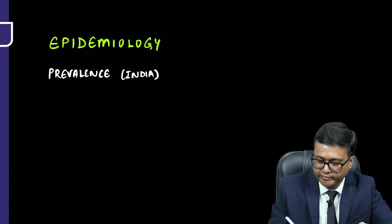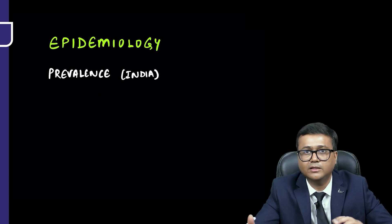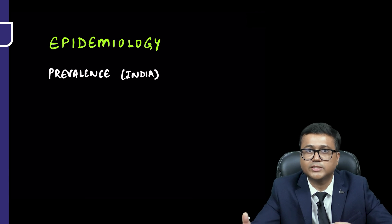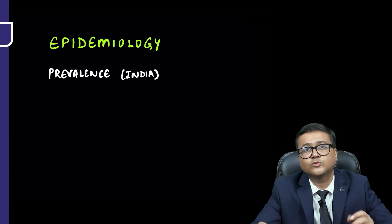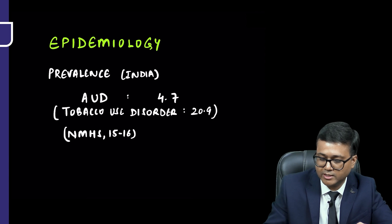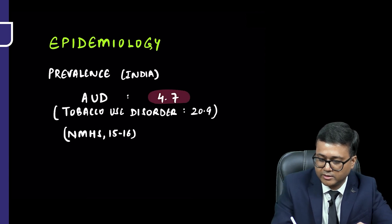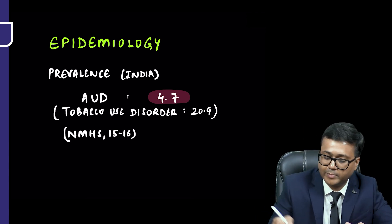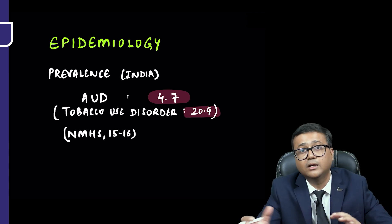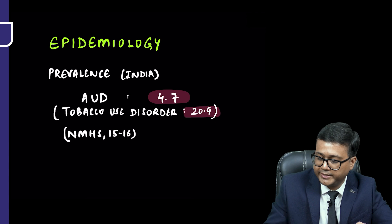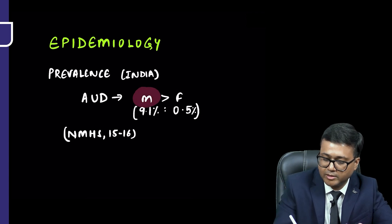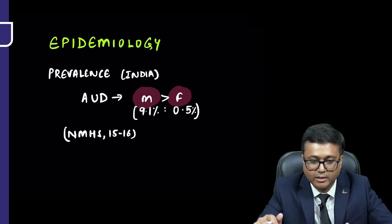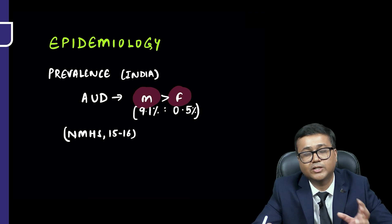For prevalence in India, data from the National Mental Health Survey 2015-16 for ages 18 and above shows the prevalence of alcohol use disorder in India is 4.7%. Among all substances, the highest is tobacco use disorder at 20.9%, making alcohol the second most common substance in India. The prevalence is higher in males at 9.1% versus females at 2.5%.